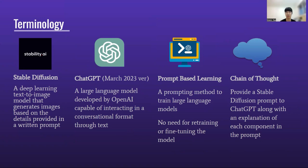We also use ChatGPT, which is a large language model developed by OpenAI that's capable of interacting in a conversational format through text. The key strategies that we use are Prompt-Based Learning, which is a prompting method to train large language models without the need to retrain or fine-tune the model, and Chain of Thought, which is a strategy where we provide a Stable Diffusion prompt to ChatGPT along with an explanation of each component in the prompt.